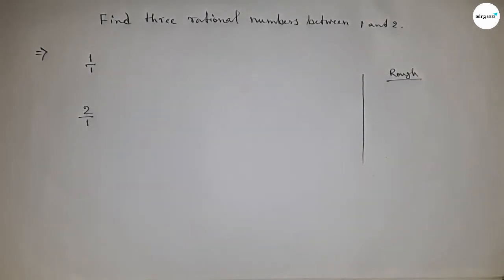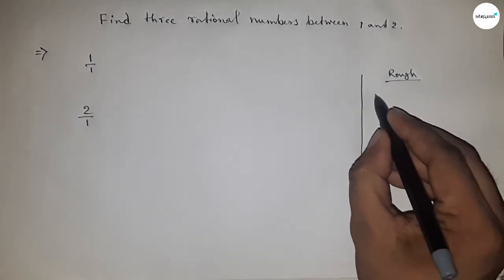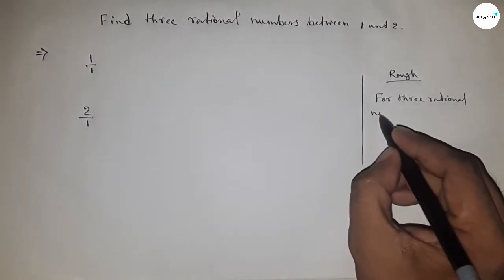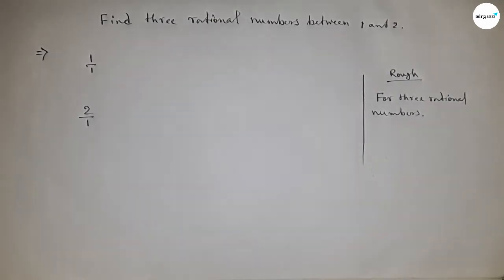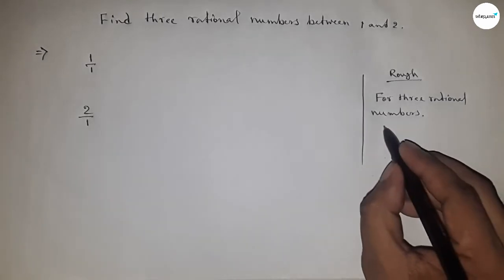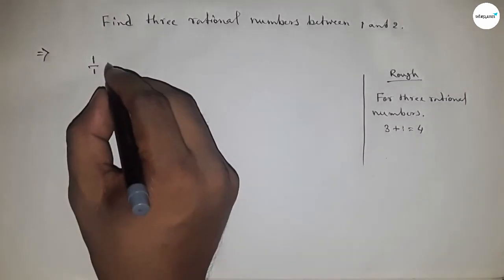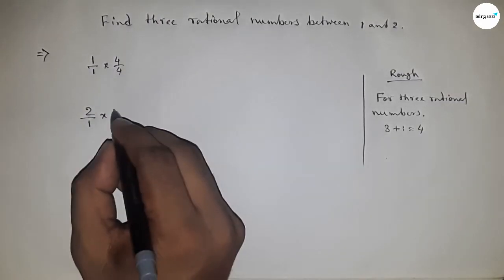Here the denominator of both are equal to 1. For three rational numbers, we have to multiply the two given numbers by 3 plus 1 equal to 4. So we have to multiply here 4 by 4 and here similarly 4 by 4.